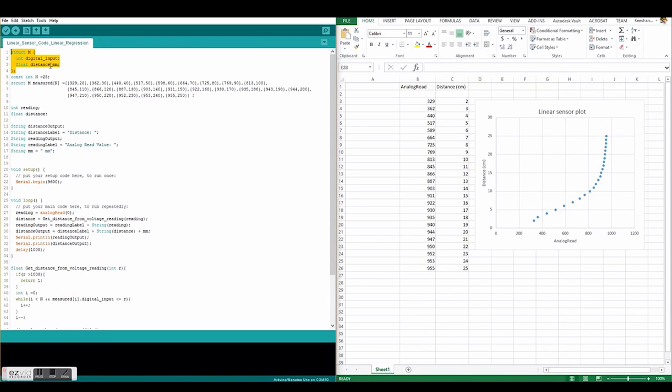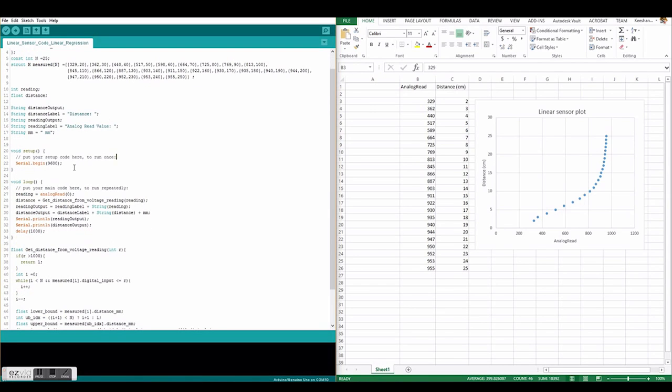This struct allows us to group the digital input and distance in millimeters found on this Excel sheet together. This struct M over here is just these table values imported into the Arduino code. There is initializing of variables. The setup is the basic serial dot begin.